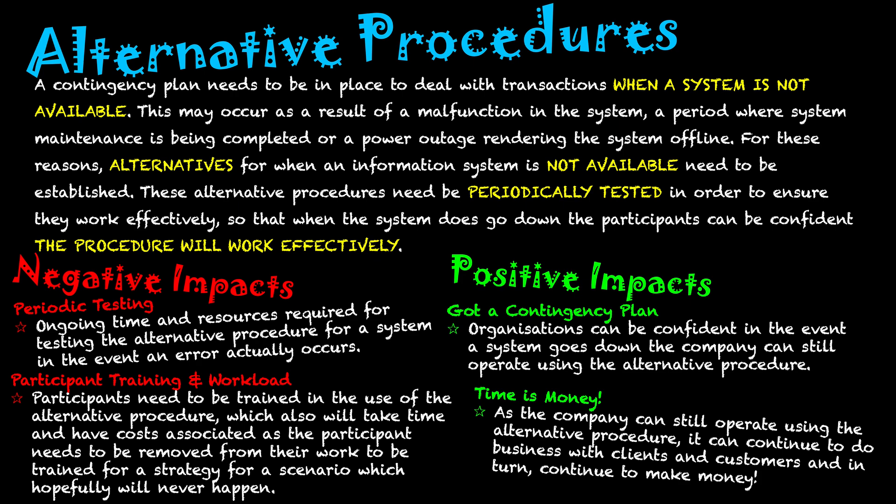I hope this gives you an understanding of the value and importance of having alternative procedures — essentially a contingency plan for if the system goes down. On the negative side, we've got to periodically test it, which takes up time and resources to ensure participants are confident in using it. But on the positive side, we do have this backup plan to run if the system goes down, allowing the organization to continue operating and continue to make money.